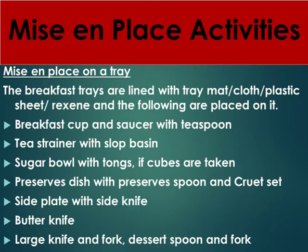Mise-en-place on a tray. The breakfast trays are lined with tray mat/cloth/plastic sheet/rexine, and the following are placed on it: breakfast cup and saucer with teaspoon; tea strainer with slop basin; sugar bowl with tongs if cubes are taken; preserves dish with preserves spoon and cruet set; side plate with side knife; butter knife; large knife and fork; dessert spoon and fork.